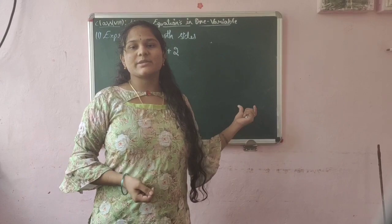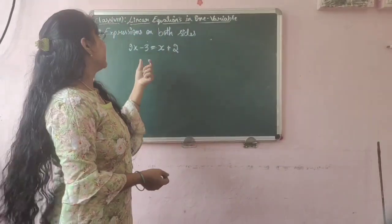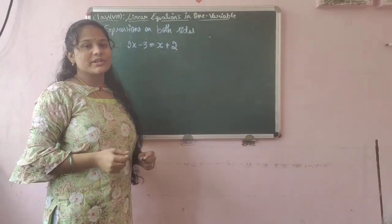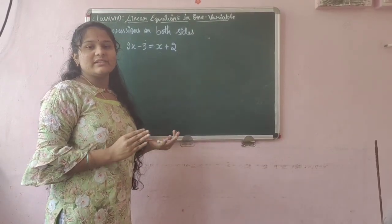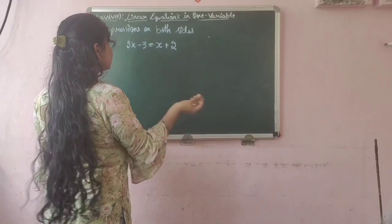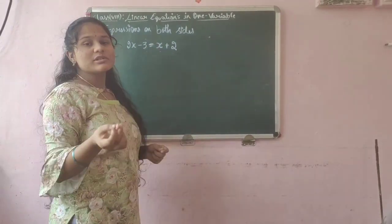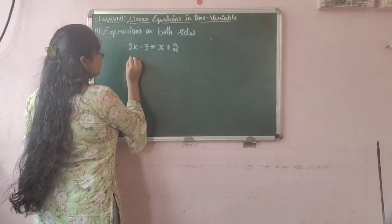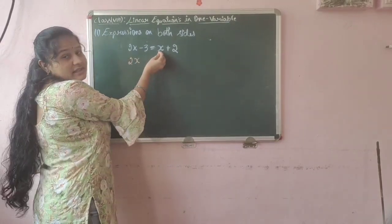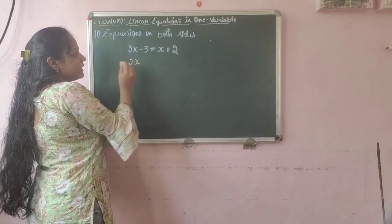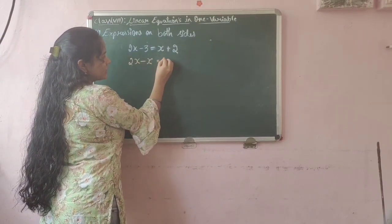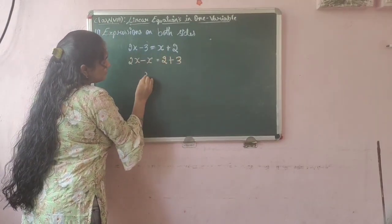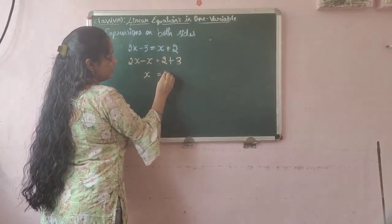The next type is expressions on both sides, meaning we have an expression on each side of the equation. In this type, we have to take the variables on one side and the numericals on the other side. When we transpose variables or numbers, the signs change. For example, taking the variable to the LHS gives minus x equals 2, and transporting the numerical to the RHS gives plus 3. So 2x minus x is x, and x is equal to 5.